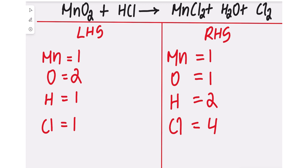We're going to start by balancing the oxygen atoms first. On the left-hand side we have 2 and on the right-hand side we have 1. So we're going to write a coefficient of 2 in front of H₂O on the right-hand side, which makes the oxygen 2 — now balanced. Adding 2 to H₂O also changes the hydrogen count from 2 to 4.